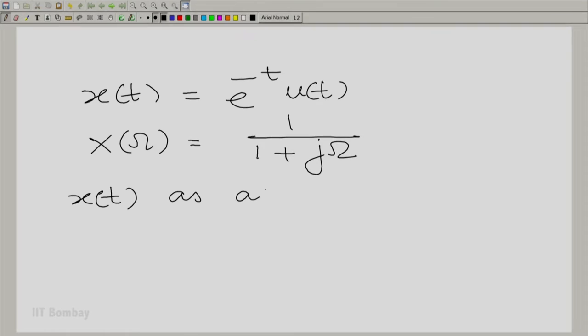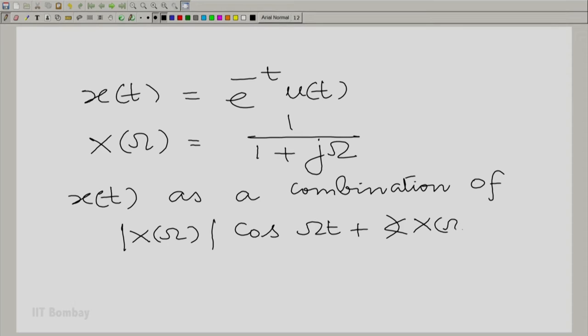Let us write that example down from that perspective again. We essentially looked at the signal x(t) equal to e raised to the power minus t u(t), and we recognized that the Fourier transform looked like this. And we said we could think of x(t) as a combination essentially of |X(ω)| times cosine(ωt) plus angle of X(ω).